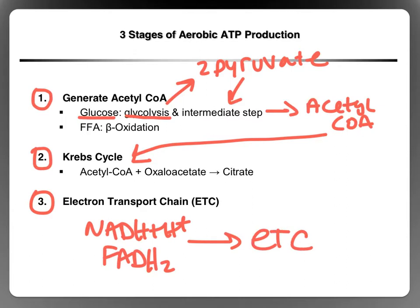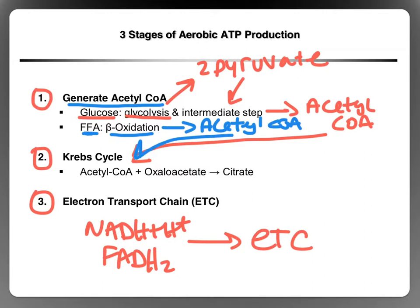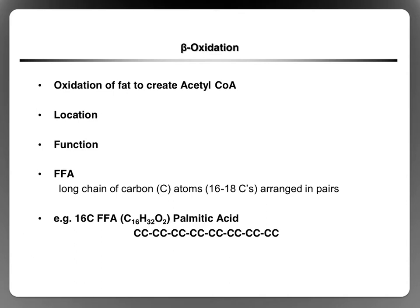What we're going to talk about in this recording is how these stages are different with fat. It's actually just a slight difference. The only difference when producing ATP from fat is the way that we generate acetyl-CoA. We're going to talk about beta-oxidation, and through beta-oxidation we will create acetyl-CoA. Just like acetyl-CoA from glucose, it will go to Krebs, and we will have NADH+H+ and FADH2s that go to the electron transport chain.